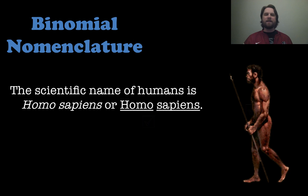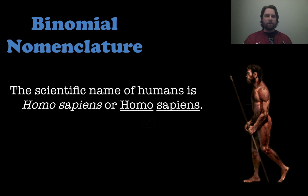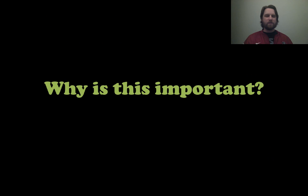The scientific name for modern humans is Homo sapiens. Homo is the genus and sapiens is the species. You can write it in italics or underlined as shown. You can see the Greek or Latin roots, the underline or italic formatting, and the capitalized genus with the lowercase species.